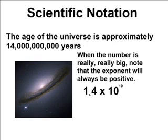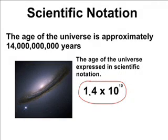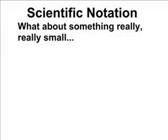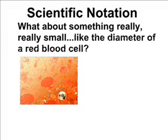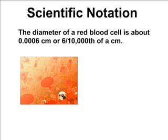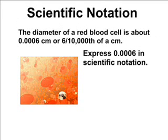So what we did is we expressed the age of the universe in scientific notation. Now let's take a number that's extremely small and express that value using scientific notation. The diameter of a red blood cell is about six ten-thousandths of a centimeter, which is an extremely small number. We're going to take this number and express it in scientific notation, starting with the value 0.0006 centimeters. Note that the six is in the ten-thousandths place — that's why we say this is six ten-thousandths of a centimeter.